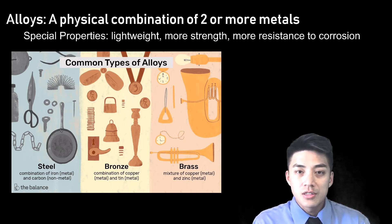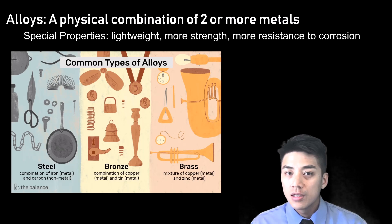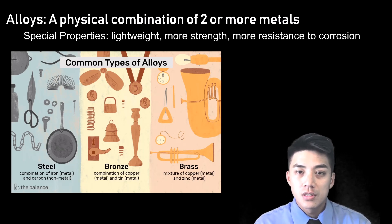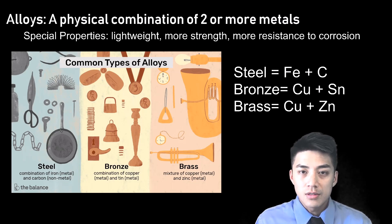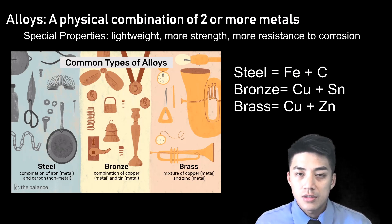Alloys are a physical combination of two or more metals. They might have special properties like being more lightweight, more resistant to corrosion, or just being overall sturdier. Some common types of alloy include steel, which is a mixture of iron and carbon. You also have bronze, which is copper and tin, and brass, which is copper and zinc.